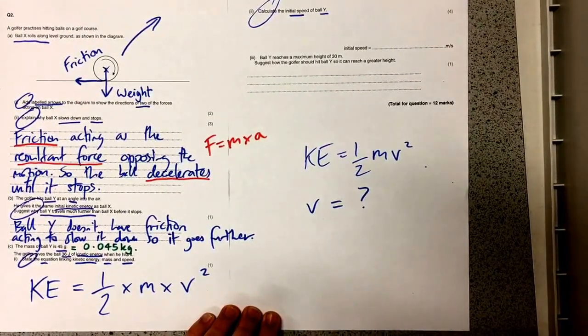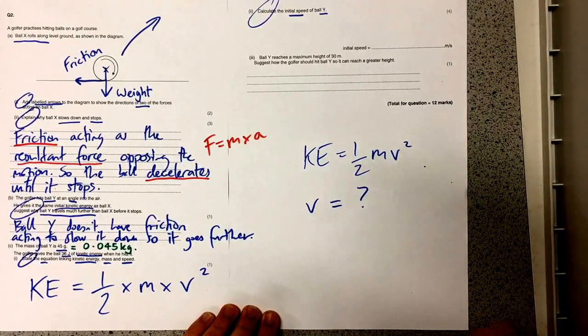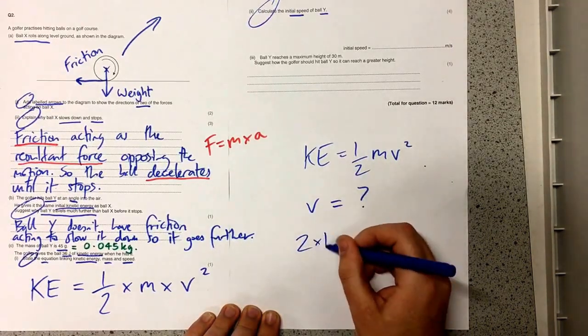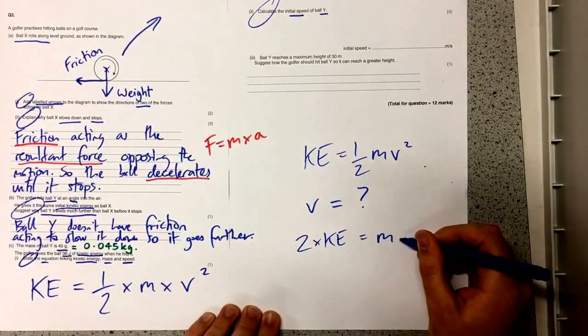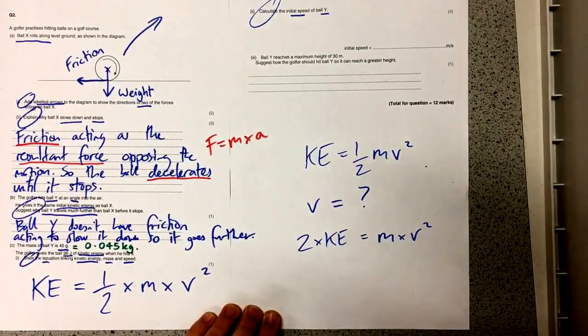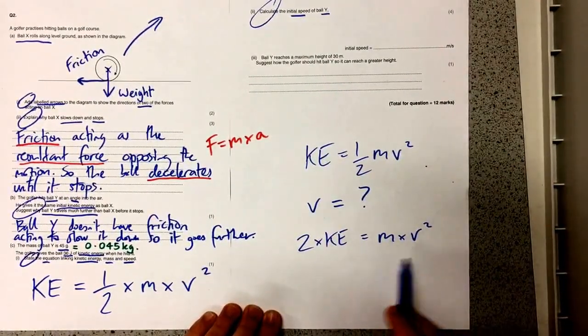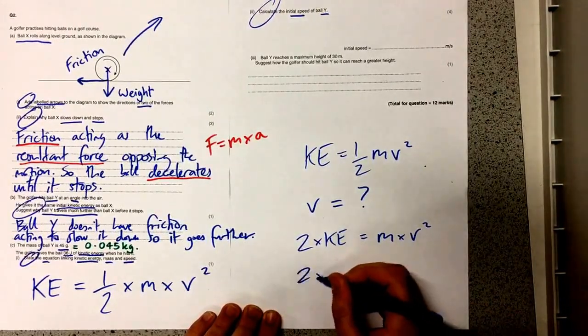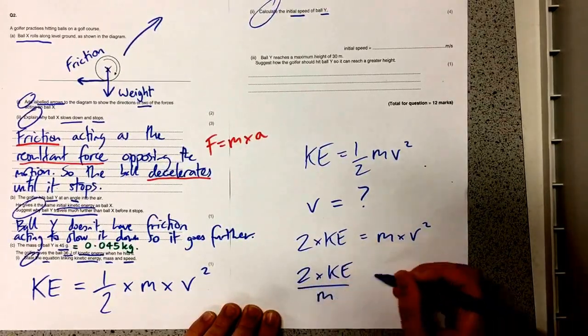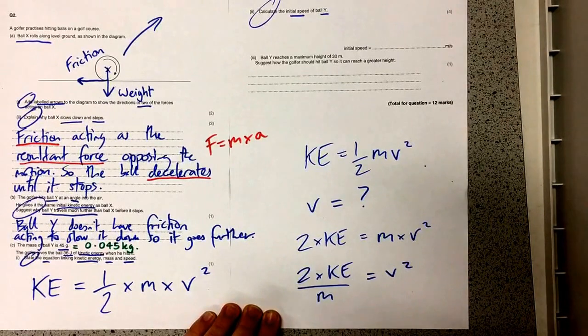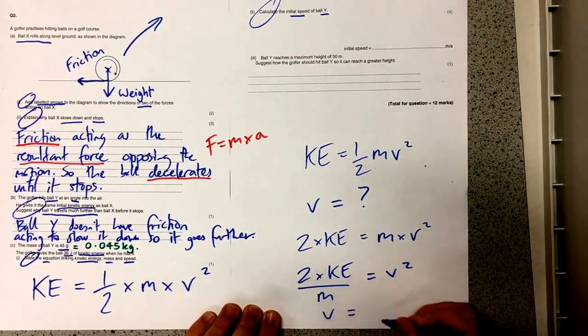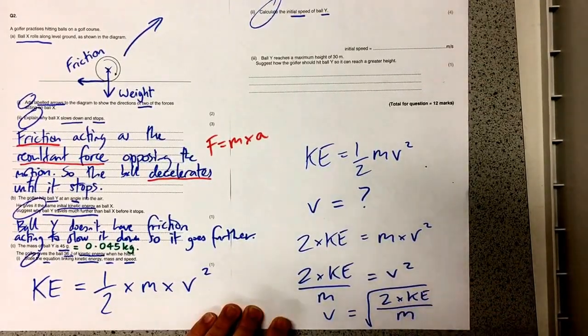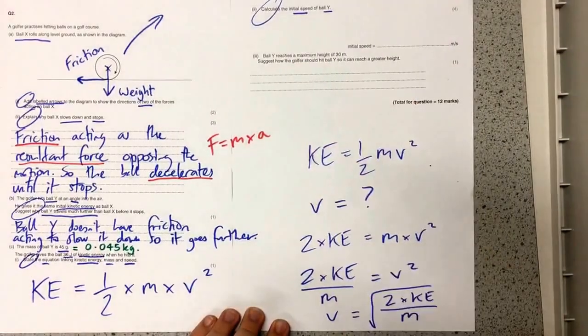Now if we want to rearrange kinetic energy equals a half times the mass times the velocity squared to give us an equation where we're going to find out v, then I've got to rearrange that equation using the rules given to me by BIDMAS. So the first thing I'm going to do is multiply both sides by two. So I'm left with two times the kinetic energy is equal to the mass times the velocity squared. Now I've got to put the mass over to the other side. At the moment it's multiplied by v so I'm going to divide both sides by m. So I get 2KE divided by m equals v squared and then the last step is to square root both sides. So 2KE over m all square rooted and this is the equation I need to use here.